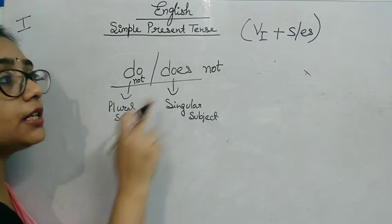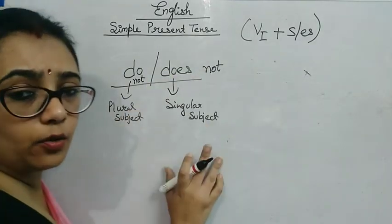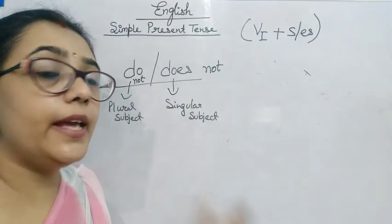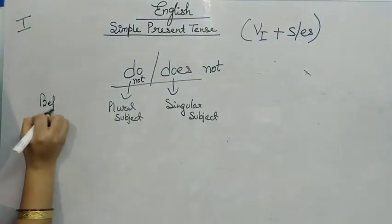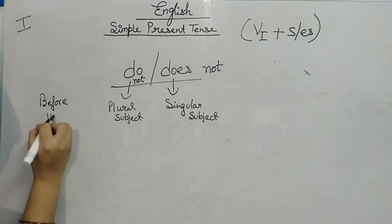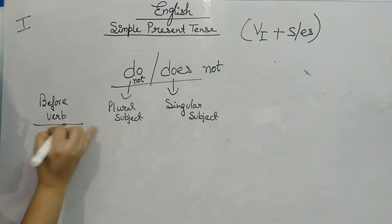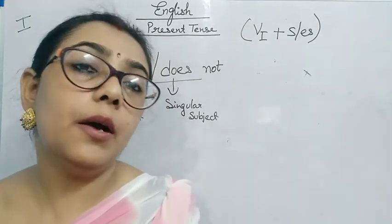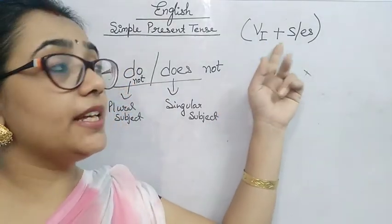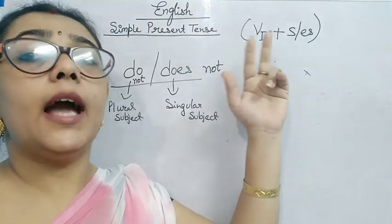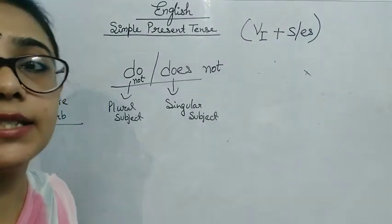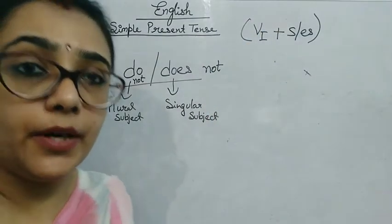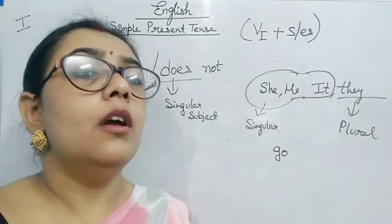'Do not' for plural subject and 'does not' for singular subject — it is placed before the verb. The sentence resembles the base form of the verb, as I have already said. S or ES is added to the third person.